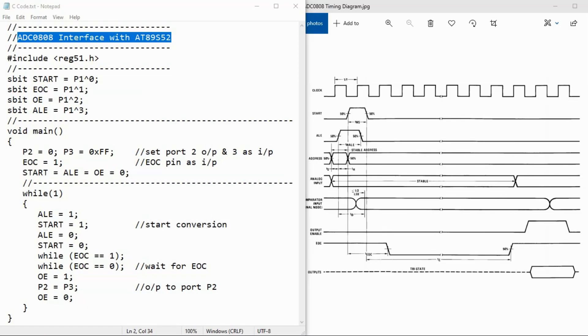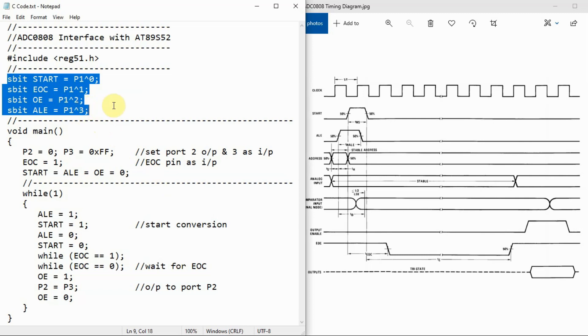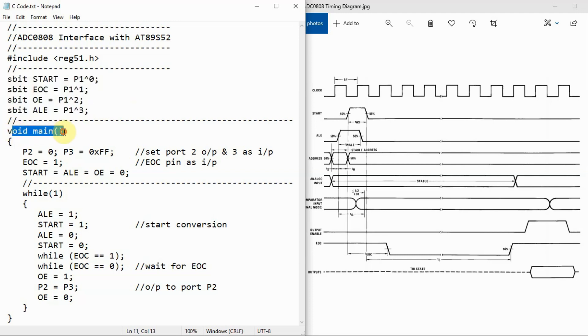A quick look at the C code used in the project. We assign the handshake signals of the A/D converter to port 1 of the microcontroller. Within the main function we set port 2 for output and port 3 for input. We set the end of conversion pin as an input pin. And then we initialize to 0 the start pulse, the address line enable pulse and the output enable pulse as per requirements of the timing diagram.